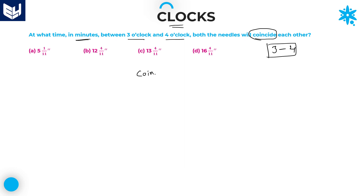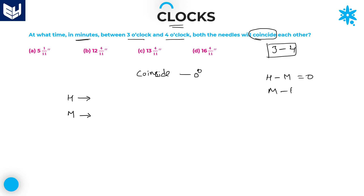Coincide means the angle between the minute's hand and hour's hand is 0 degrees. So, H minus M equals 0, or M minus H equals 0, which means H is equal to M.